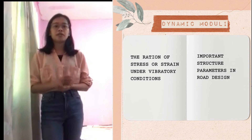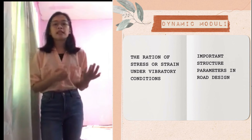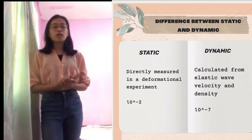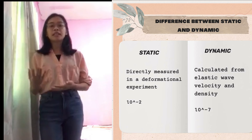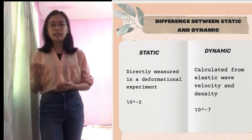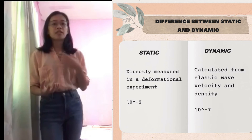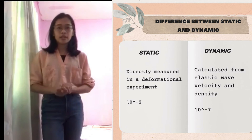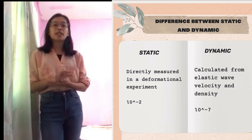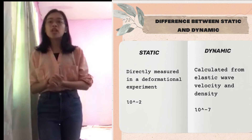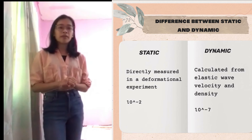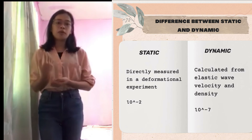Now, let us proceed to the difference between the static and dynamic modulus. The static and dynamic moduli of the same rock may significantly differ from each other. The main reason for this is likely the difference in the deformation, or what we call the strain. In the dynamic wave properties experiment, the strain is measured at about 10 to the power of negative 7, while the static strain may reach 10 to the power of negative 2.